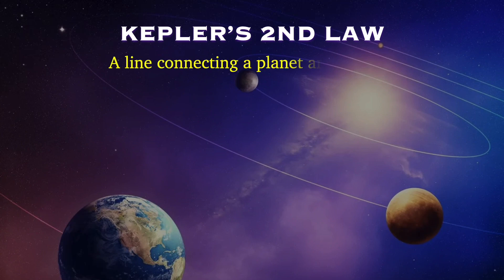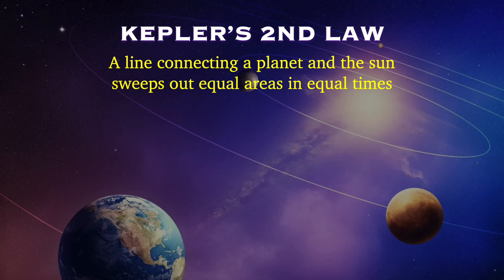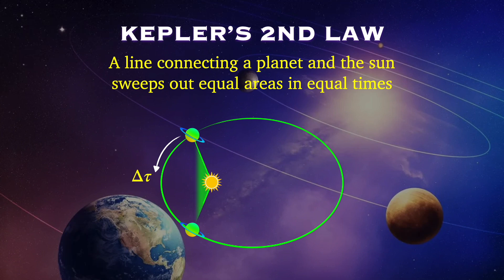This law states that a line connecting a planet and the sun sweeps out equal areas in equal times. What exactly does this mean? Well, we have our elliptical orbit, and we've got the sun out of focus, and let's say the planet starts at some point along the orbit. We now draw a line from the sun to the planet, and after some time passes, the planet's going to be somewhere else along the orbit. If you then fill in the area swept out by this line, that area will be the same anywhere along the orbit as long as the same amount of time has passed.